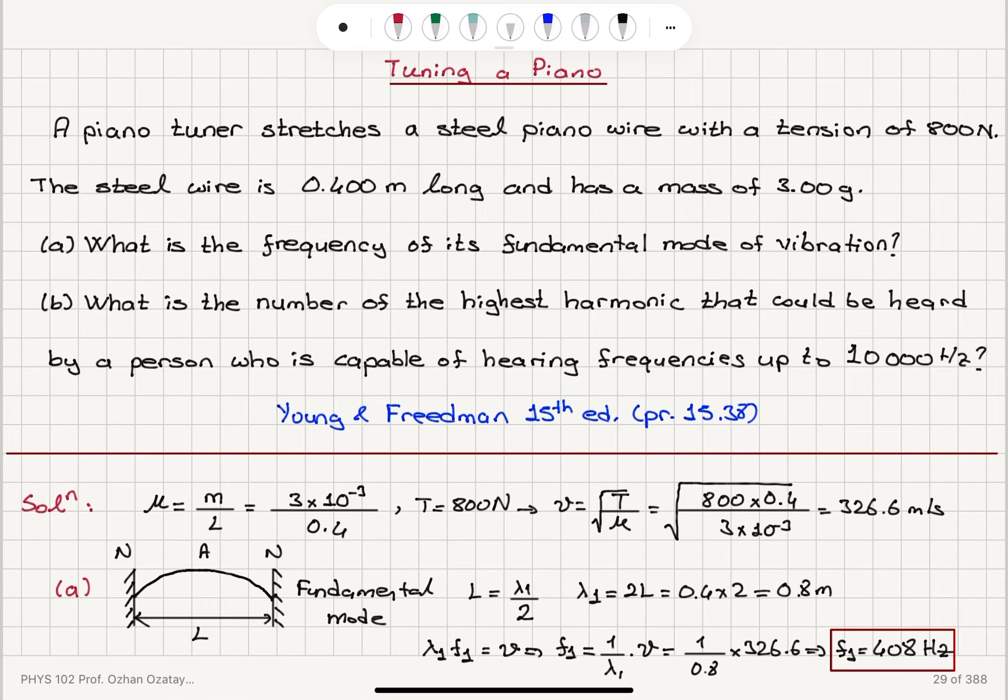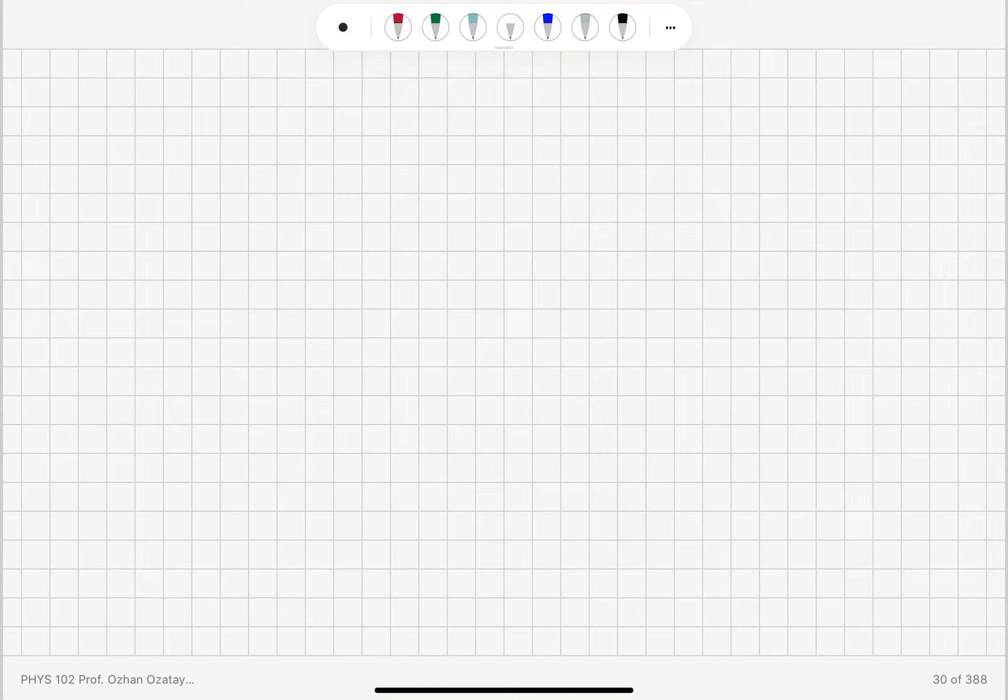Now, the other modes will have an integer multiple relationship with respect to the fundamental frequency. So for the nth harmonic, we will have a frequency that is an integer multiple of F1.